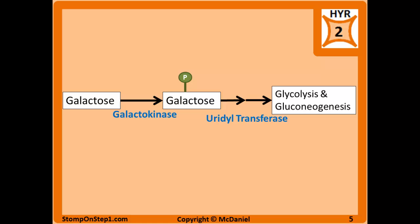Now we can move on to disorders of galactose. Galactose is another sugar not that different from glucose. It's acted on by galactokinase to become galactose 1-phosphate, and then through a couple of steps — the first of which involves the enzyme uridyl transferase — galactose is eventually used to create sugar or energy through glycolysis and gluconeogenesis. These disorders tend to be more severe than the fructose disorders because galactose can build up and accumulate in tissues, being converted into galactitol, the alcohol version of galactose, which causes osmotic damage.